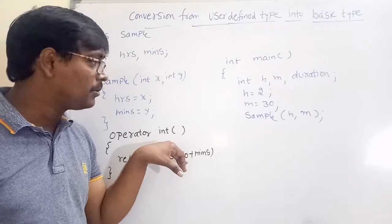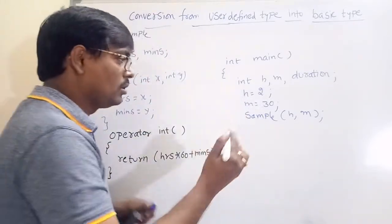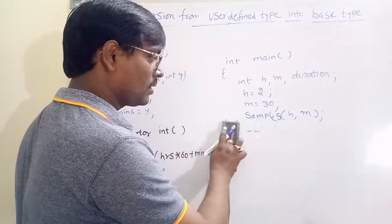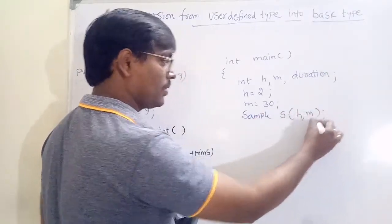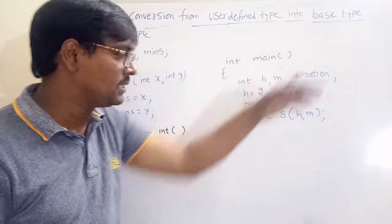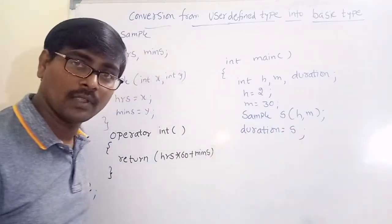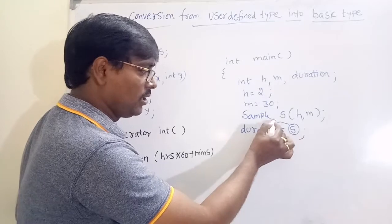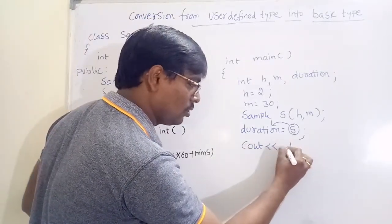Now, our aim is to convert user defined data type into basic data type. So I write: duration = time (the sample object S). Here, duration is of basic data type and S is of user defined data type. Whenever we write this assignment statement, the conversion operator is called. We can also print the value using cout << duration.